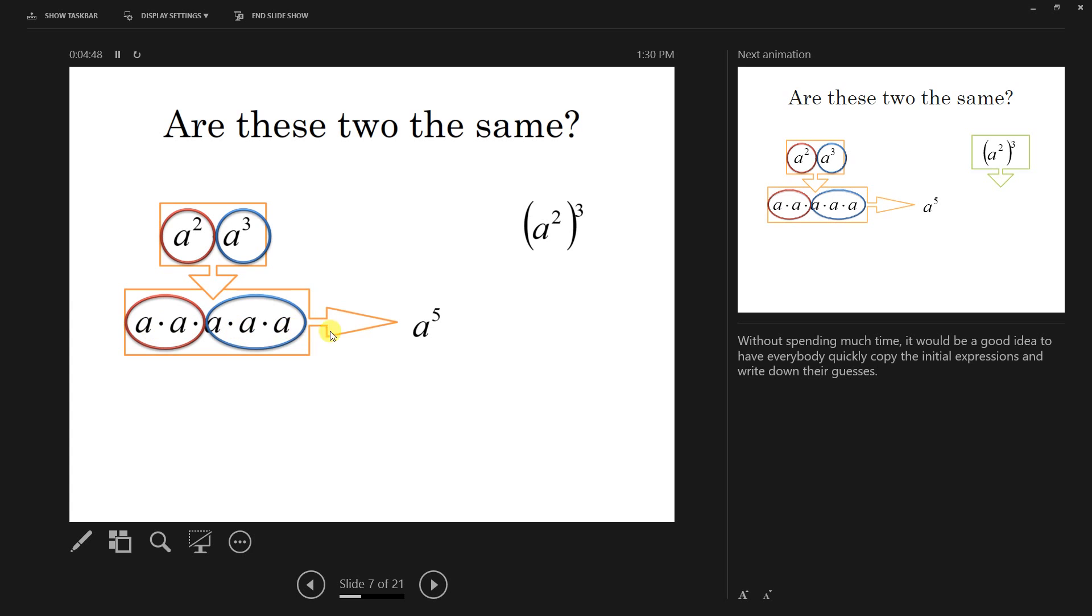So we've got a squared is two a's and a cubed is three. Together, repeated multiplication, that's what this means. There are five of them. And so you can tie the original idea of exponents to the product of two bases the same, and you add the exponents.